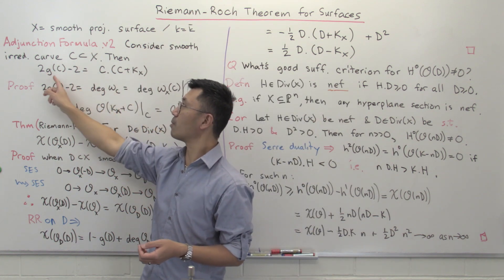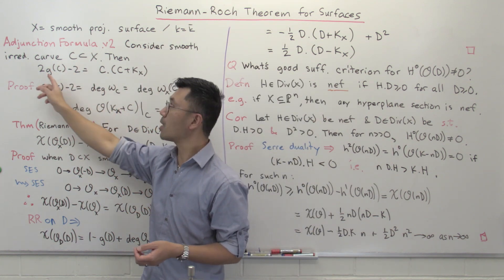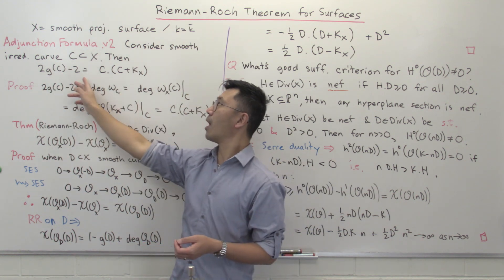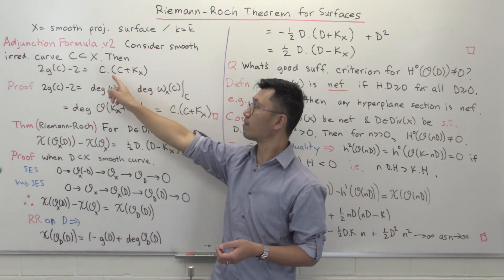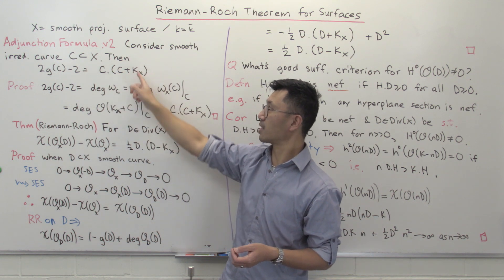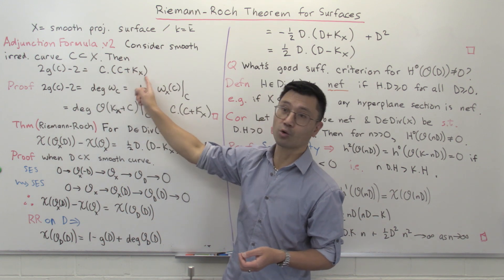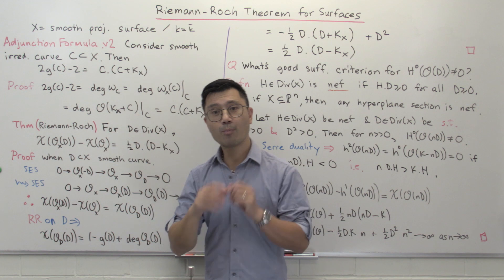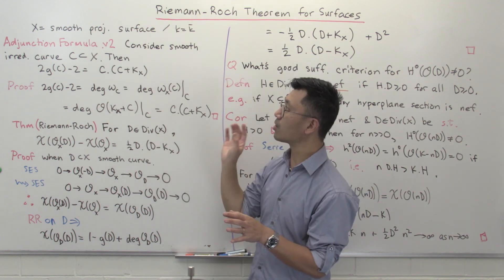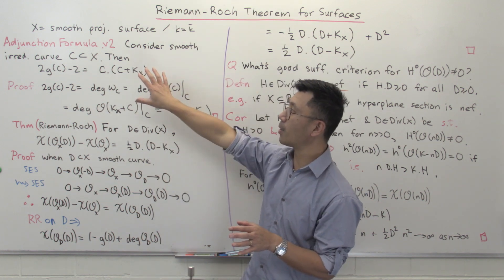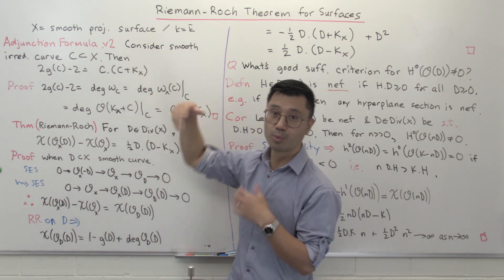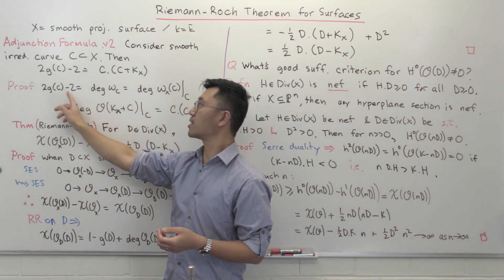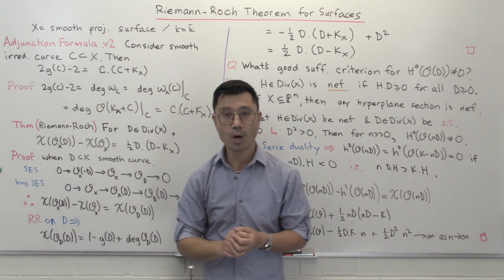I'll write it in terms of 2g(C) minus 2. That equals the intersection product of C with C plus K_X, where K_X is the canonical divisor on X. The proof of this follows fairly readily from the adjunction formula given in the previous video.